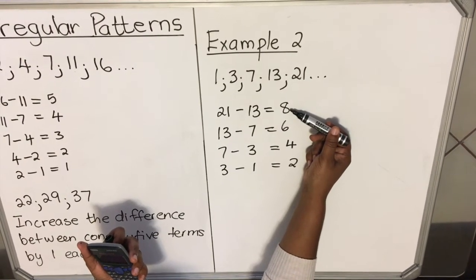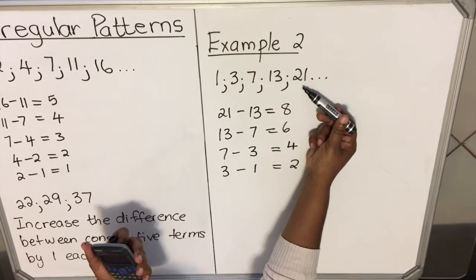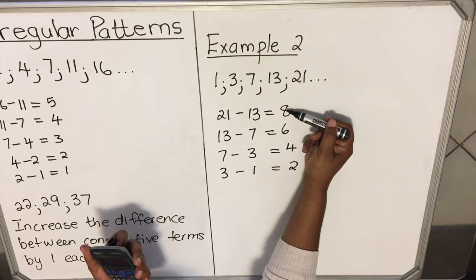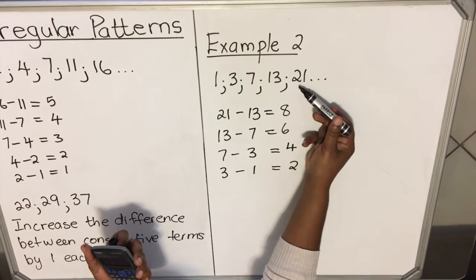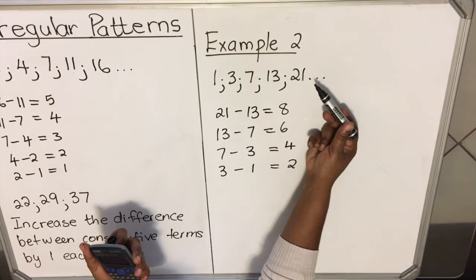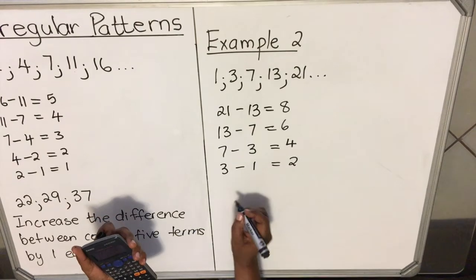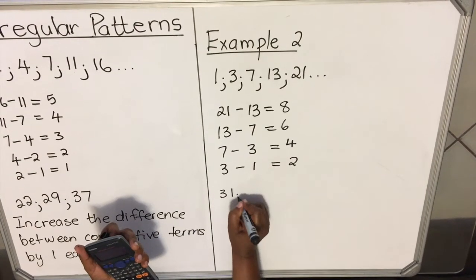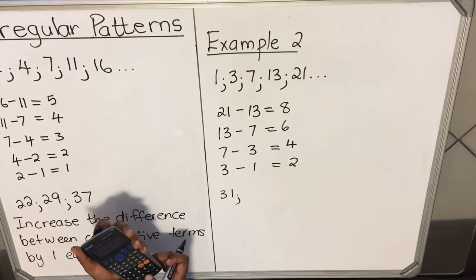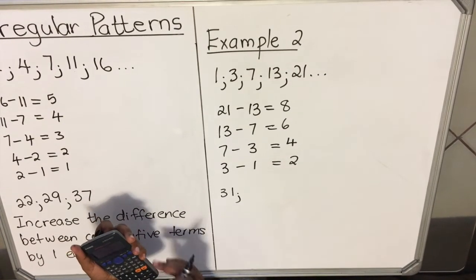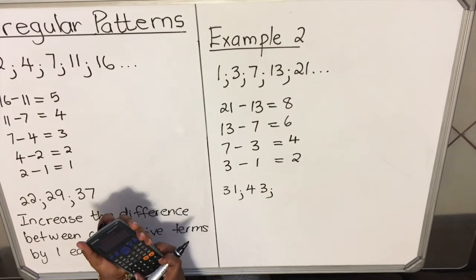So if I have 21, that's my last term. I'm going to add 2 to the difference and get the next term. It means I'll have 21 plus 10, then my next term will be 31. And then 10 plus 2 is 12. I have 31 plus 12, then I get my next term to be 43. 43 plus 14, then I get my next term 57. So this is my next three terms.